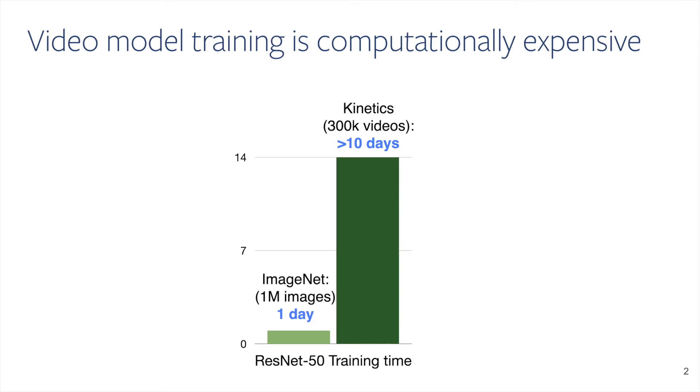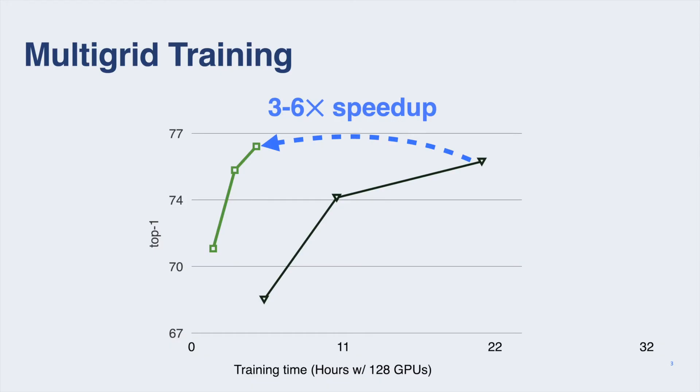Video model training is computationally expensive, often more than 10 times more expensive than training an image model. What we propose here is a method called multigrid training that trains video models 3 to 6 times faster without losing accuracy. Why is this possible?